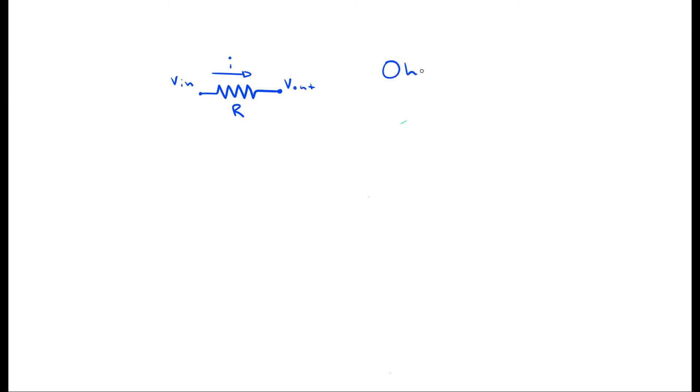which states that the voltage drop across the resistor is equal to the product of the current flowing through it and the resistance r. Considering the applied voltage to be the input and the resulting current I to be the output, the equation can be written in the following way.